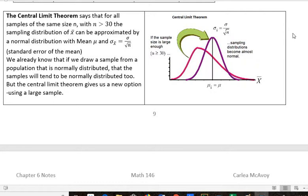But the Central Limit Theorem gives us a new option. That new option is to use a large sample. And so if the sample size is large enough, and in general we're talking about n greater than 30, the sampling distributions become almost normal.